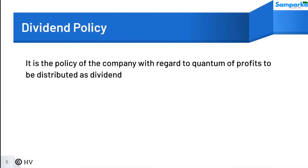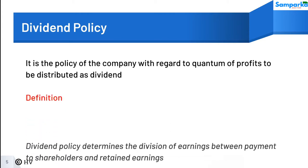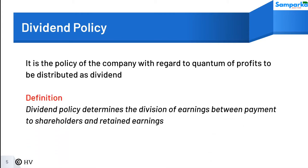It is the policy of the company with regard to the quantum of profits to be distributed as dividend. Dividend policy determines the division of earnings between payment to shareholders and retained earnings — Western and Brigham.